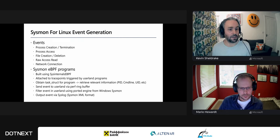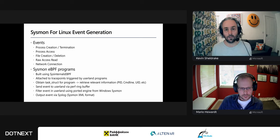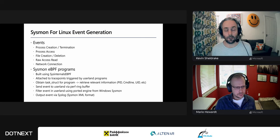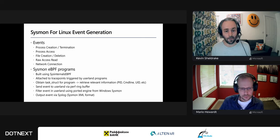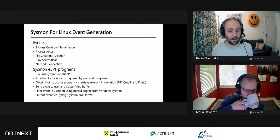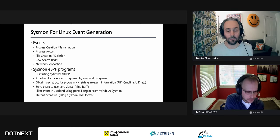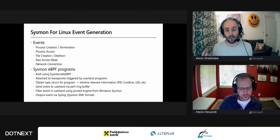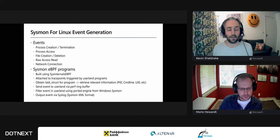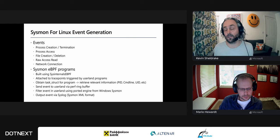For Sysmon event generation: we attach to trace points; when a userland program issues a syscall, our programs run, pull information from the task struct, build an event, send it through the perf ring buffer back to userland. That event is then filtered with the ported software from the Windows version of Sysmon and output to syslog rather than the Windows event log.